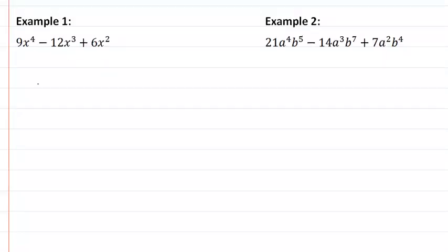So in example one, the first thing that we want to do is find the GCF. I look at my numbers, I have a nine, twelve, and a six. So it looks like my number part will be three. They all have an x, so we'll have an x for the GCF, and my lowest exponent is two. So three x squared is my GCF.